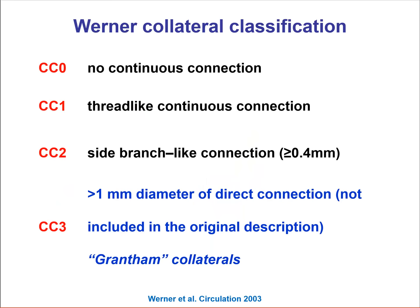This is the Werner classification. The initial one had three categories: CC0 without continuous connection, CC1 a thread-like connection, and CC2 a side branch-like connection of more than 0.4 millimeters. Now there is a modification — a CC3 collateral with more than one millimeter diameter, which has been sometimes called the Grantham collateral. These are large collaterals that are very appealing and favor upfront use of the retrograde approach.